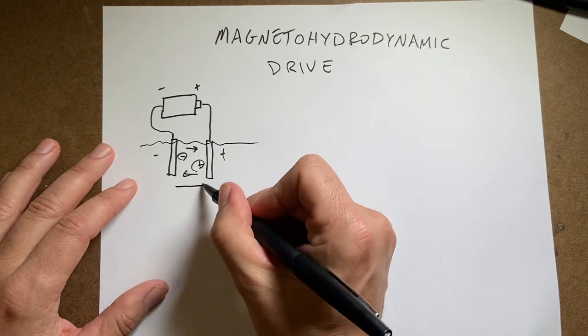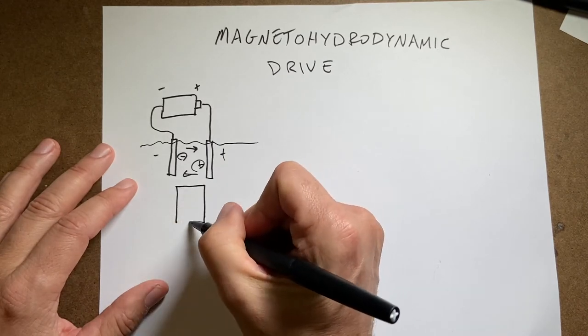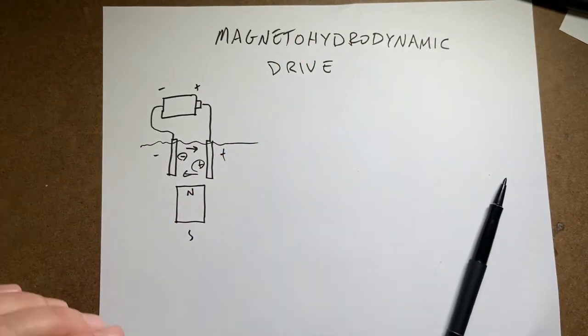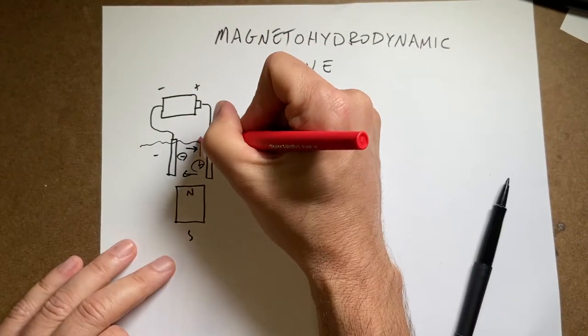Now what you need to do is get a magnet. North, south, and that makes a magnetic field. Let's put it as red because I'm running out of space here. B.